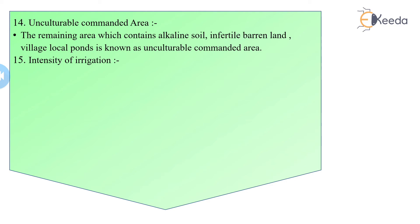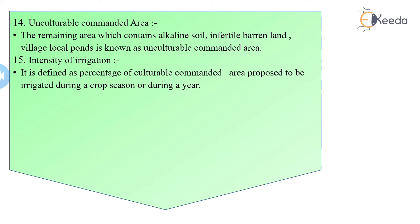The culturable commanded area is further divided into two categories. But first, let's discuss the intensity of irrigation. Intensity of irrigation is the percentage of the culturable commanded area proposed to be irrigated during a crop season or during a year. We have Kharif season, Rabi season, and summer season — the percentage of culturable commanded area proposed to be irrigated in each season is known as the intensity of irrigation.